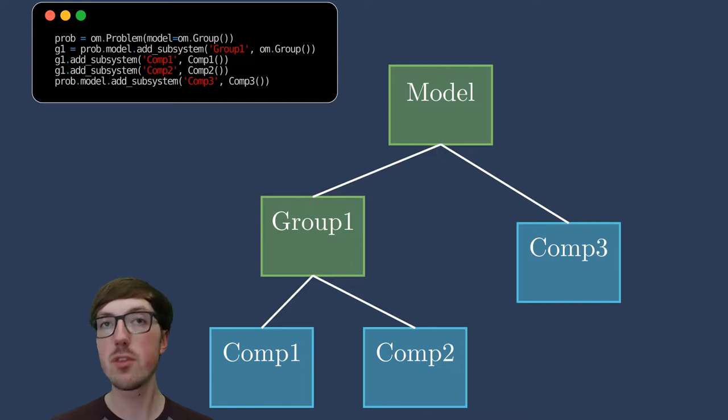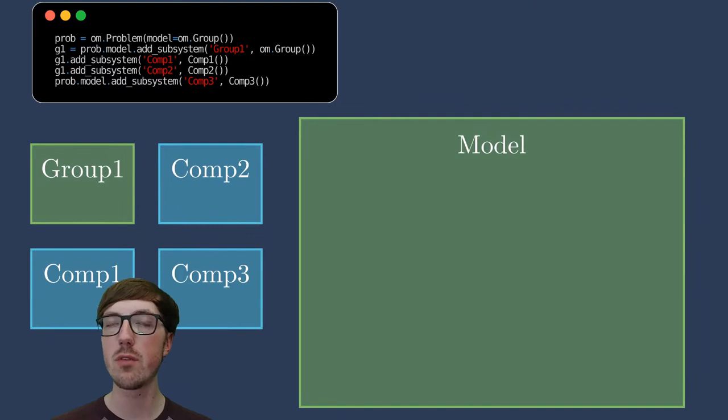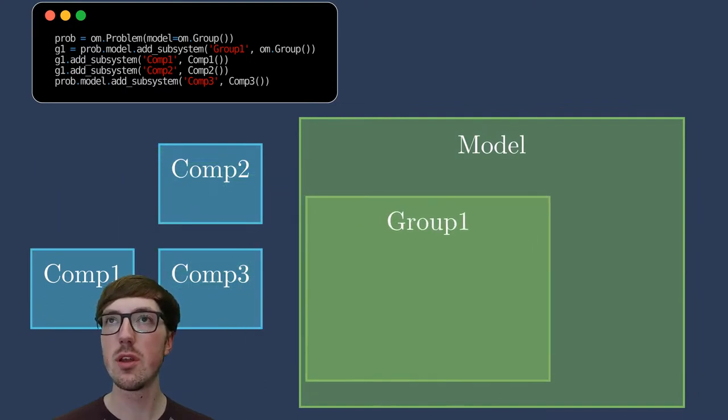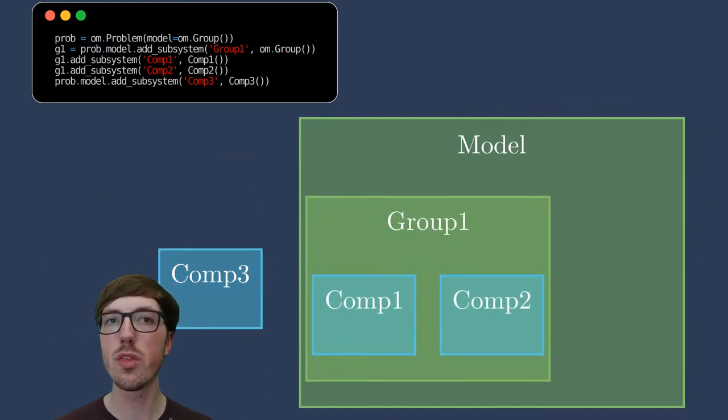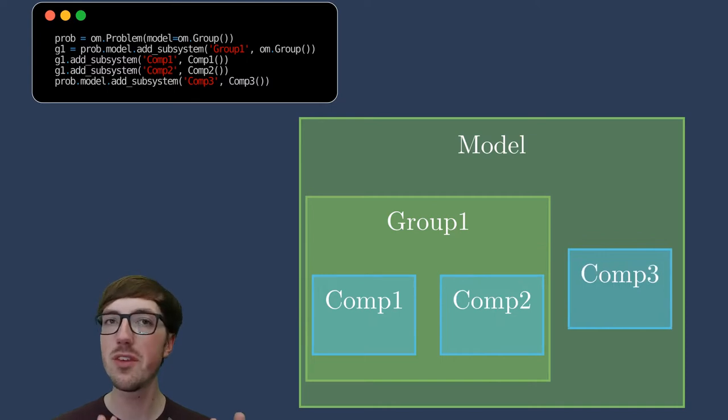The idea of how many groups you should have is something we'll cover later on in this lesson. Now some people like this tree view of the groups, but let me show you another view of the exact same system. So here we have the model, and it's kind of a nesting doll situation. Then we have group one within this model, and within group one, components one and two. This is the exact same kind of simple model I just showed in the tree view, but now in this nesting doll situation.